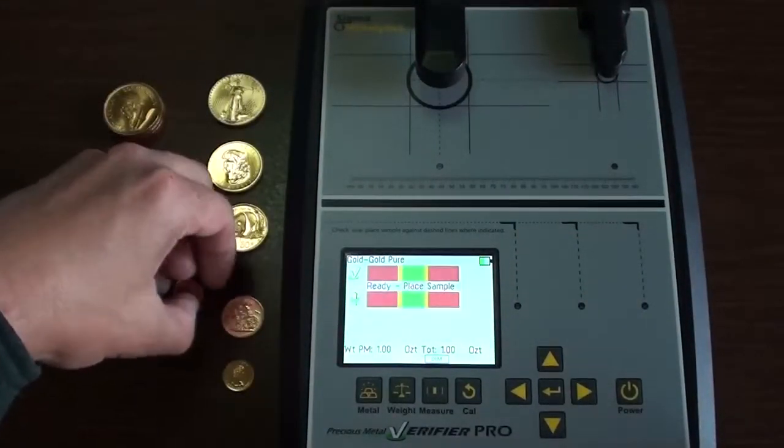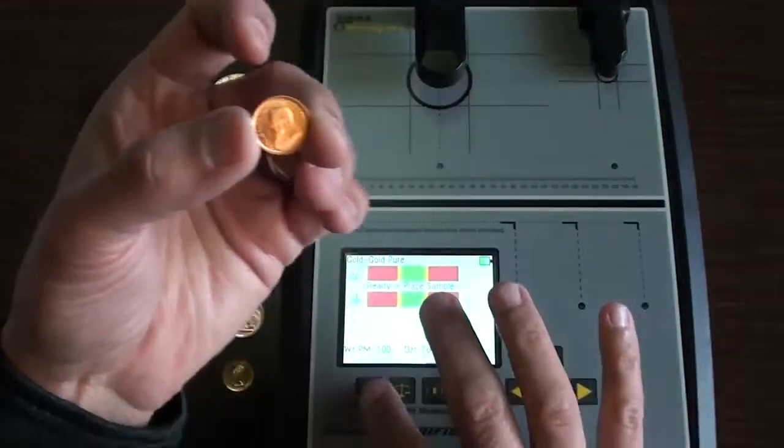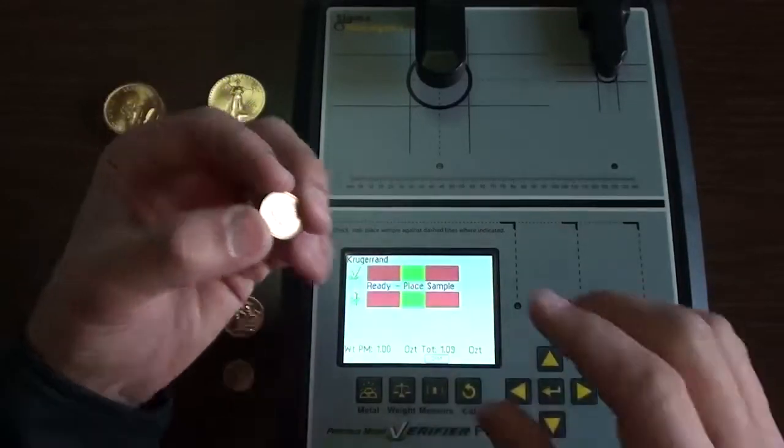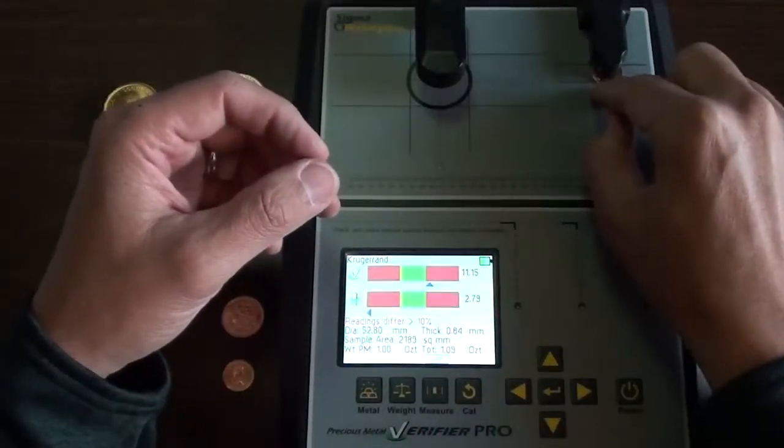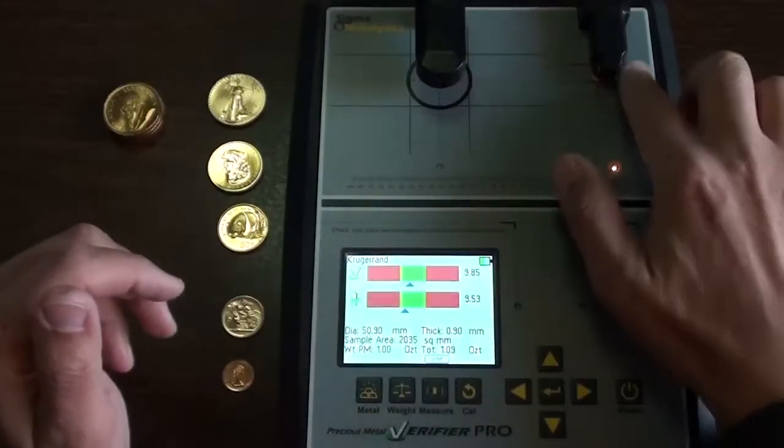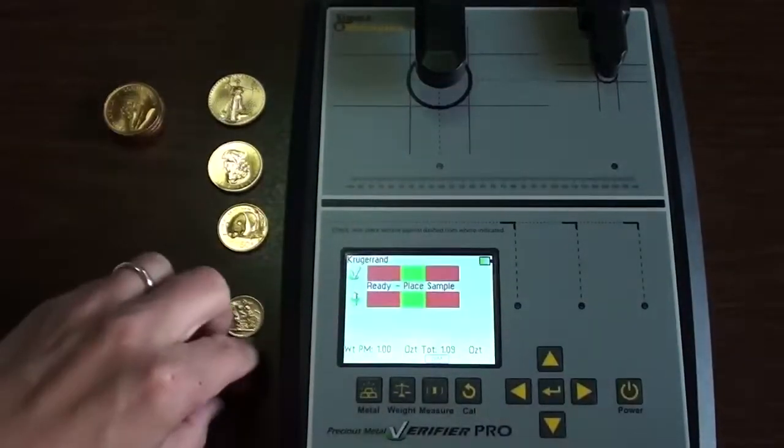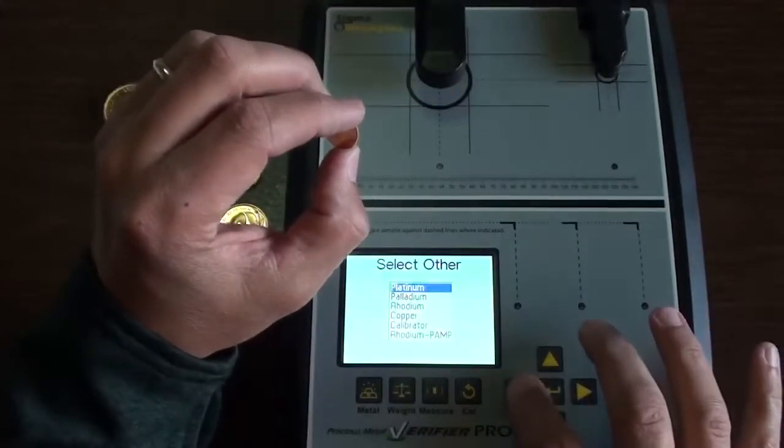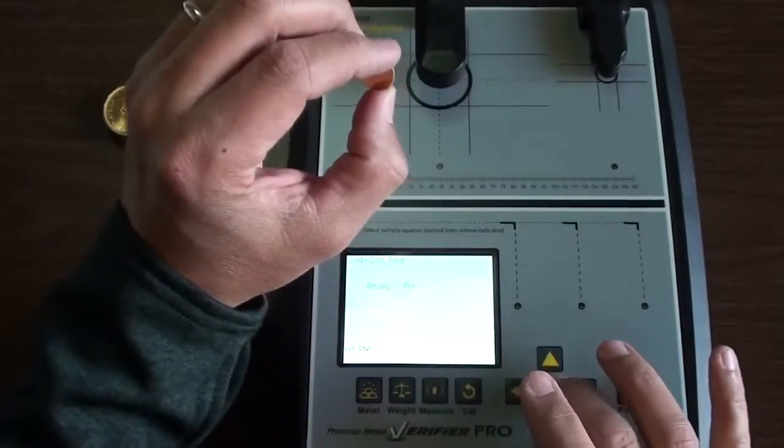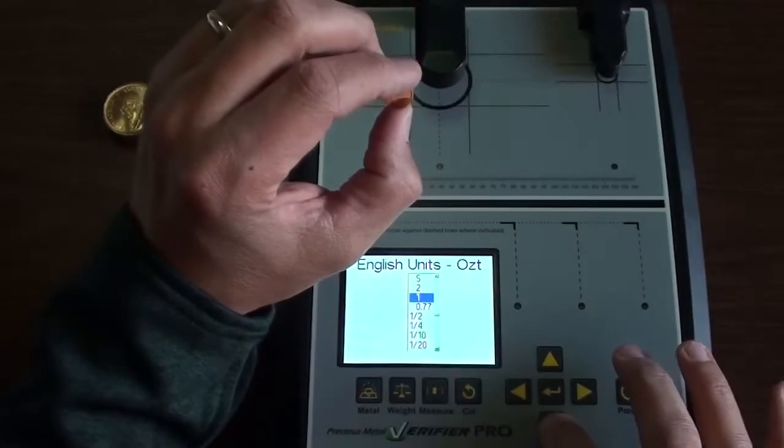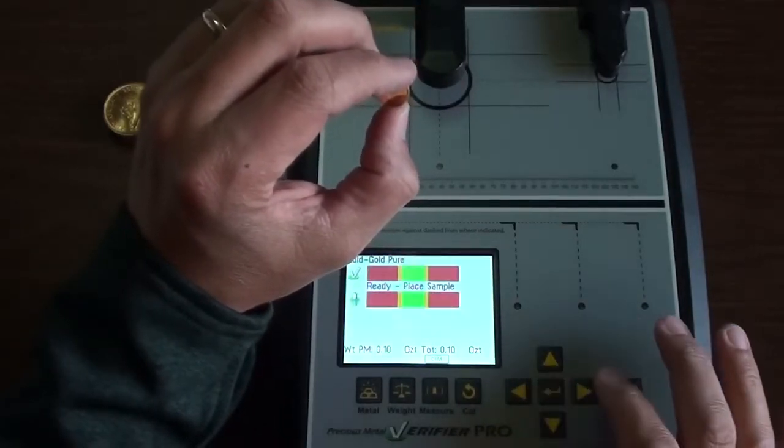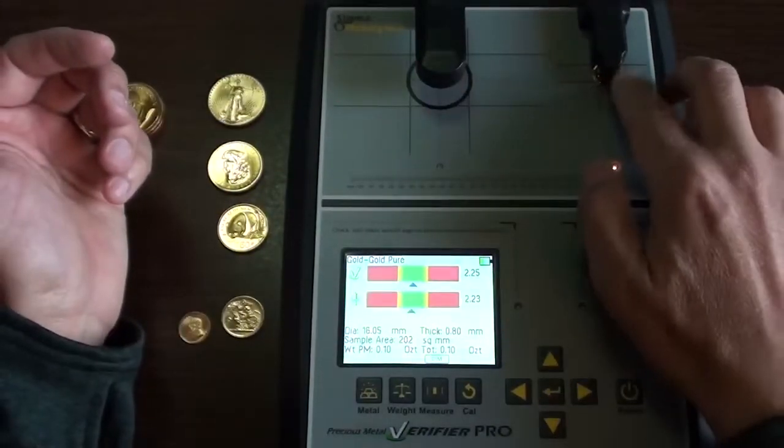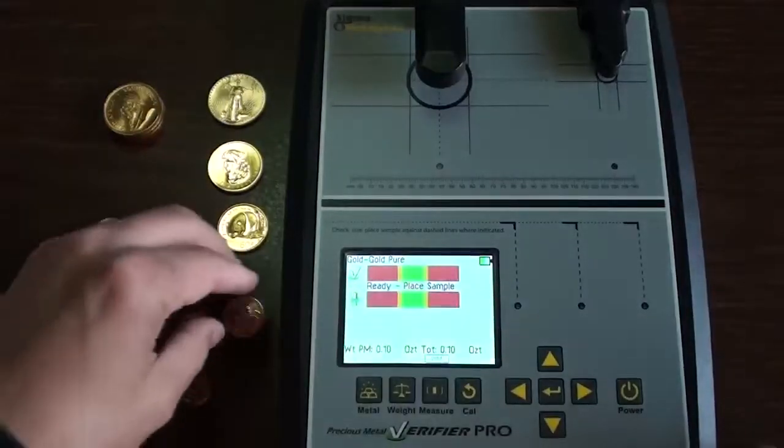This is a Krugerrand, a little tenth ounce Krugerrand. So I'm going to go ahead and change that back to the Krugerrand setting. And I'll have the Maple Leaf also. So I'm going to go back and set that to pure gold. And then I'll have to change the weight here because it's a tenth of an ounce, not a full ounce. But I'll set that under there like that. And boom, solid reading is right in the middle. So that gold Maple Leaf is great.